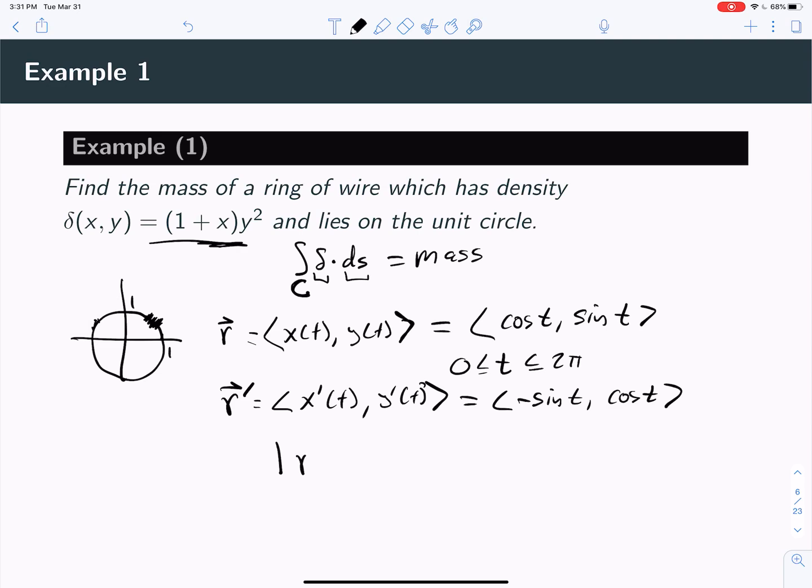And then the length of r' would be the square root of negative sine t squared plus cosine t squared. But that's really the square root of sine squared plus cosine squared of t, which is just 1.